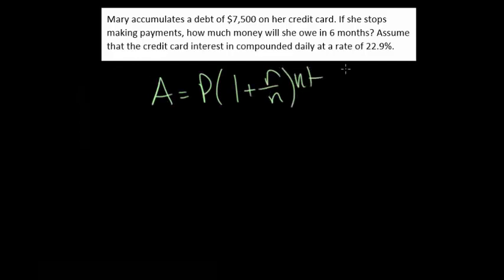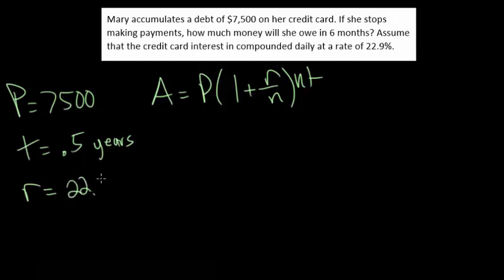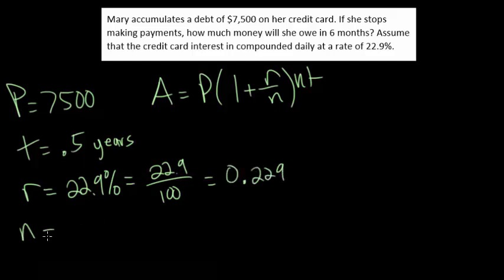Ultimately, we just need to figure out what all of these letters are for this particular problem. Our principal, the amount that we're initially borrowing, is $7,500. Our time is 6 months, but remember, T is always in years, so this would be 0.5 years. Our rate is 22.9%, which is fairly typical for a credit card. A percent, remember, we're just dividing by 100. When dividing by 100, we can move this decimal two places to the left, so we get 0.229 for our rate. The number of times we're compounding this is daily, so that means 365 times in a year.